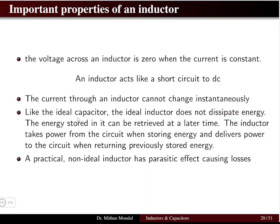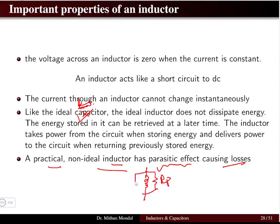An ideal inductor does not dissipate energy. The energy stored in it can be retrieved at a later time. The inductor takes power from the circuit, stores energy, and then delivers the power back to the circuit when returning the previously stored energy — similar to an ideal capacitor with R = 0.